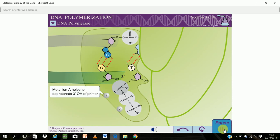Metal ion A helps to deprotonate the 3' hydroxyl of the primer, producing an oxyanion to attack the alpha-phosphate of the incoming DNTP.